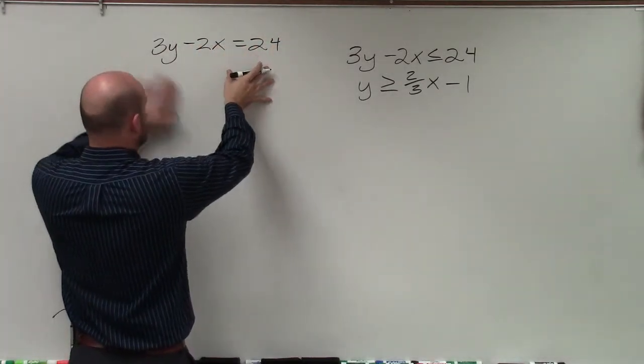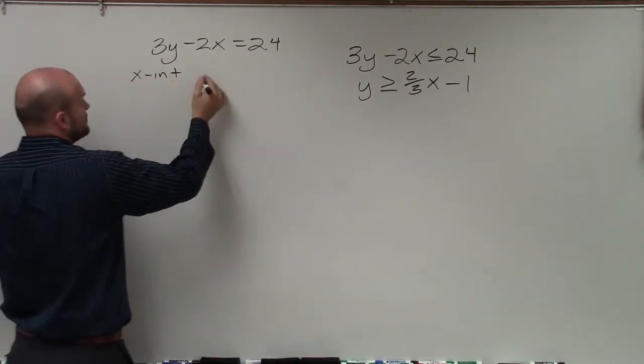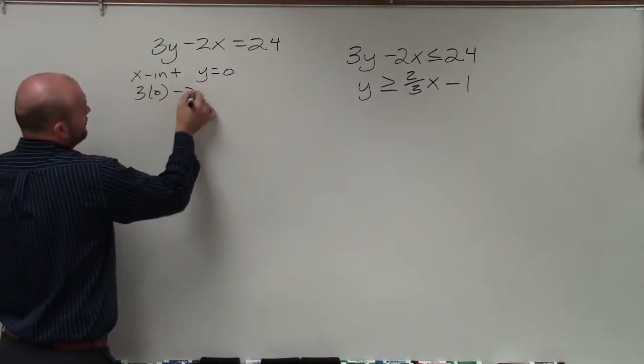Remember, when graphing intercept form, basically all we're doing is determining what the x and y-intercepts are. And the x-intercept is when y equals 0. So I basically just put 0 in for y and then solve for x.